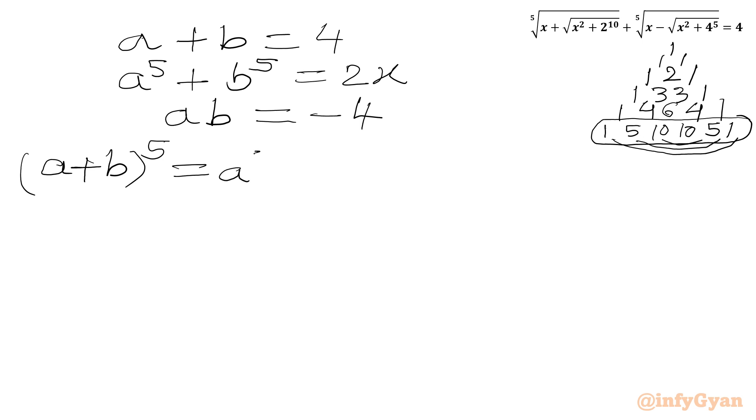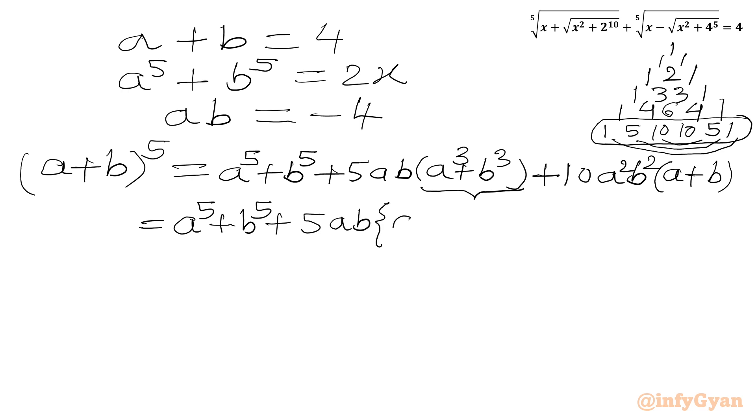So I can write a power 5 plus b power 5. Coefficient 1 is over, coefficient 1 is over, plus 5 times ab. In the bracket, a cube plus b cube. Coefficient 5 is over. Now 10 times a square b square times a plus b. Further I can write a cube plus b cube as, let me write a power 5 plus b power 5 plus 5ab. And then I can write a plus b whole cube minus 3ab a plus b. Then we have 10 times a square b square a plus b.